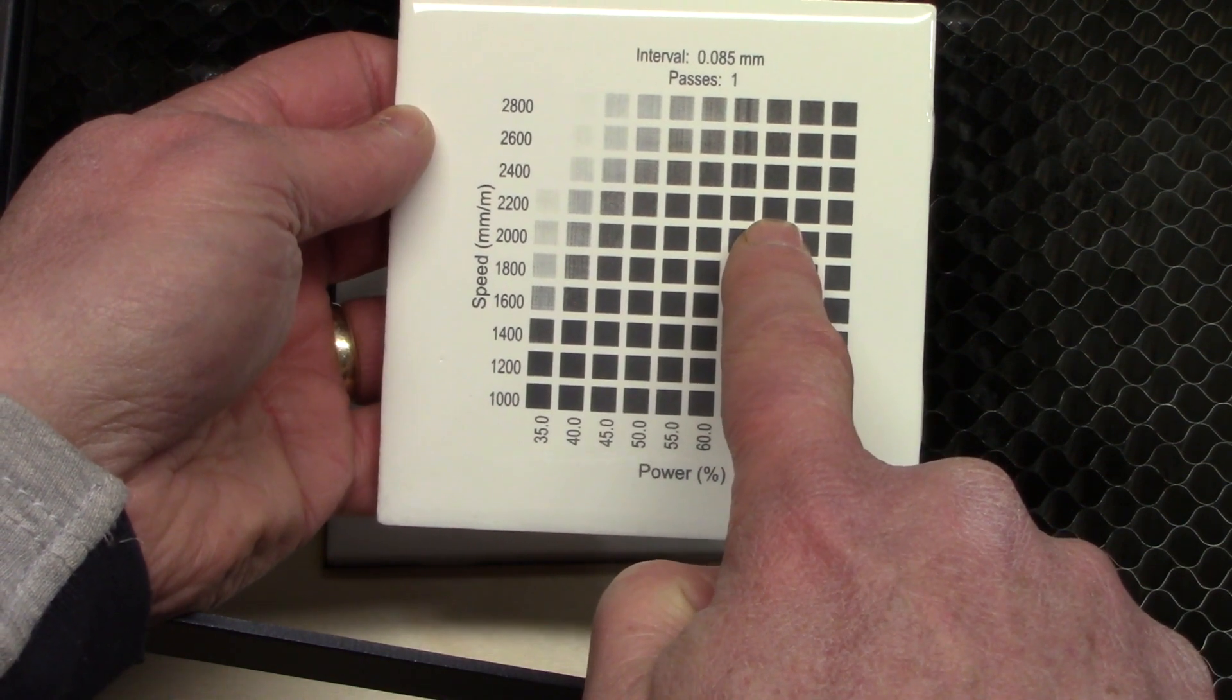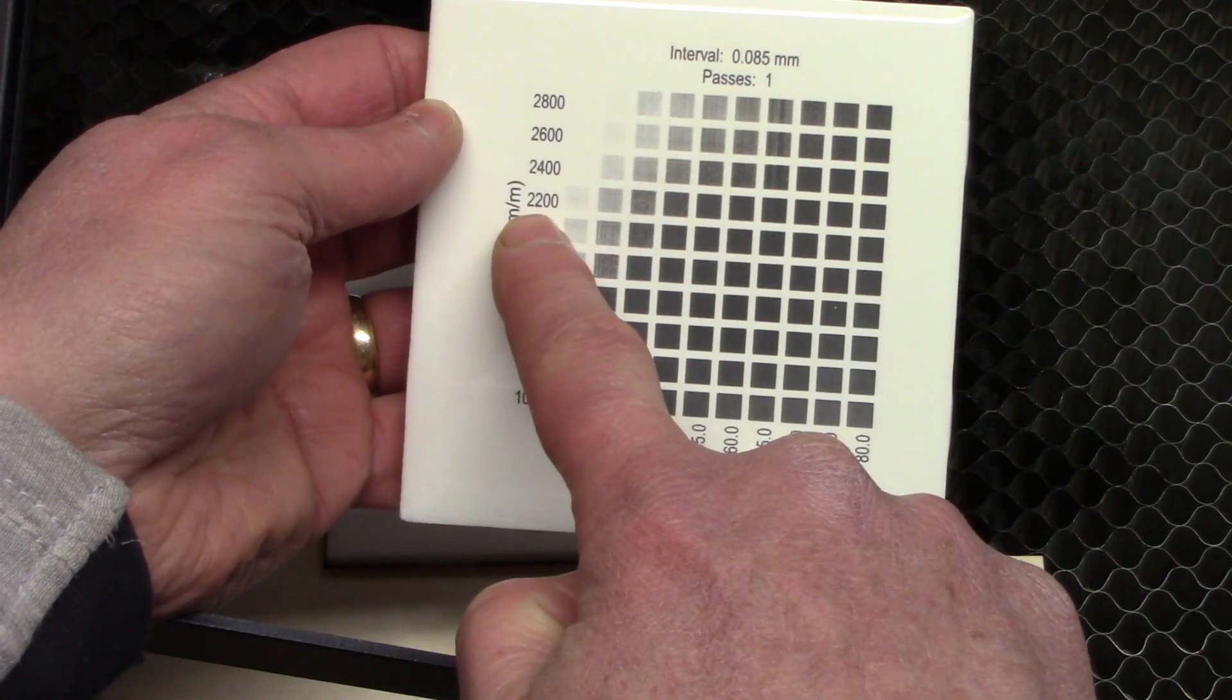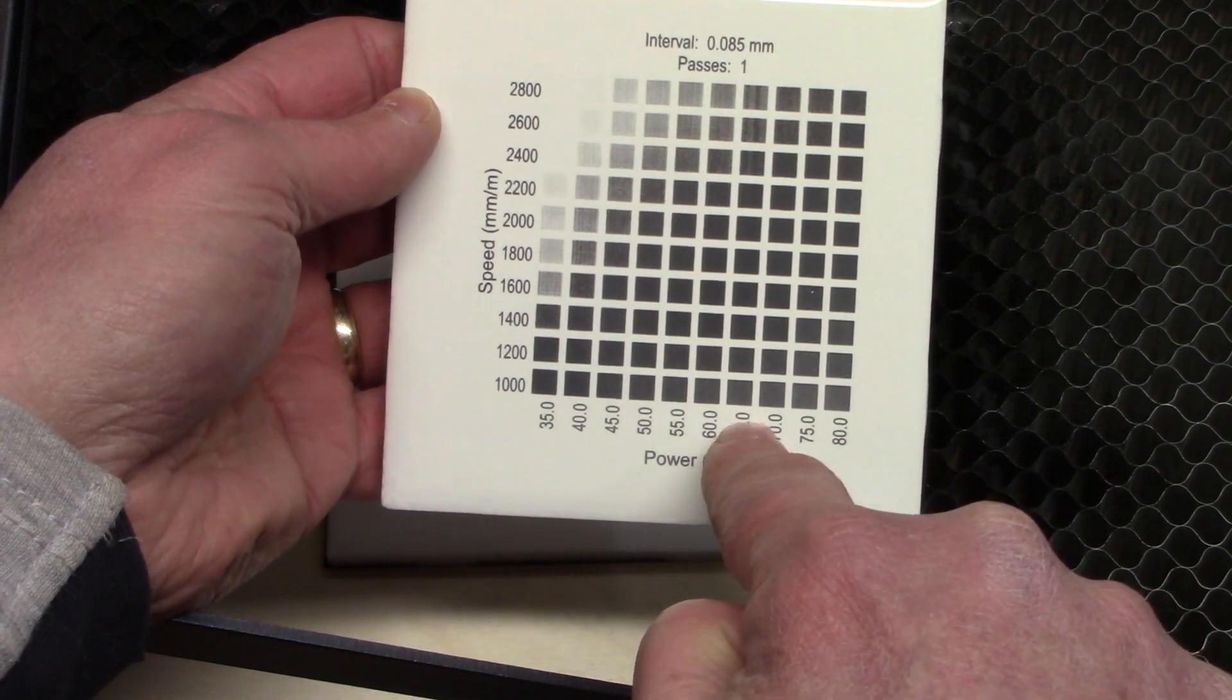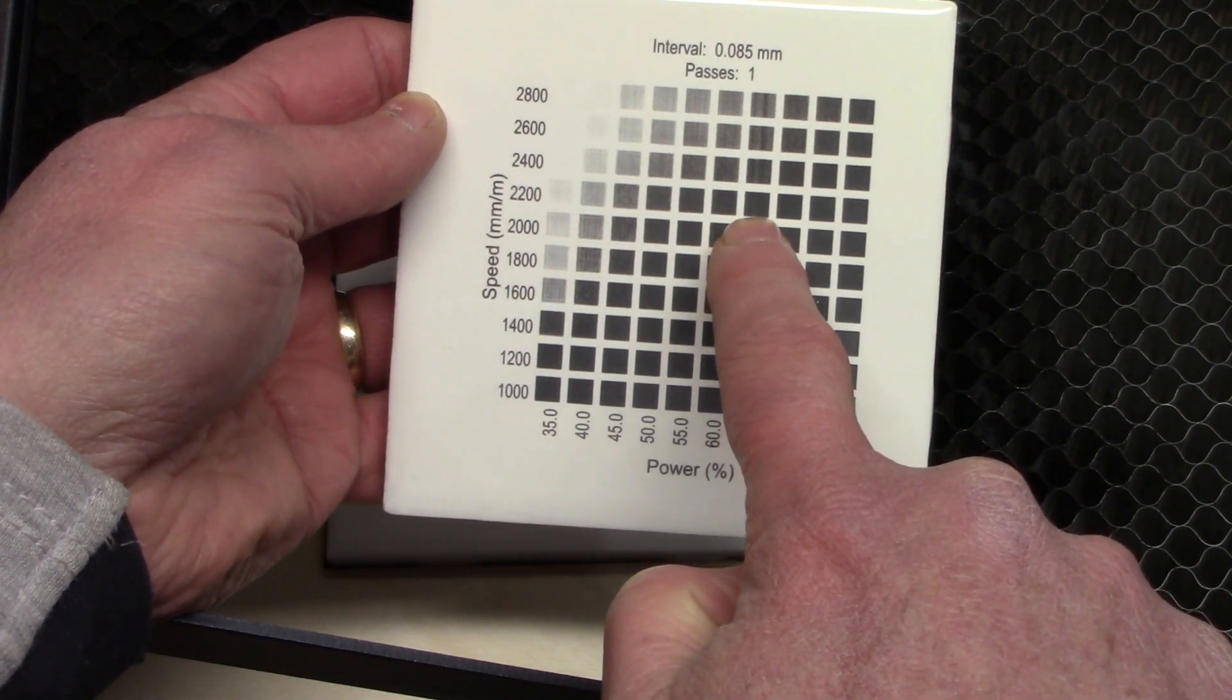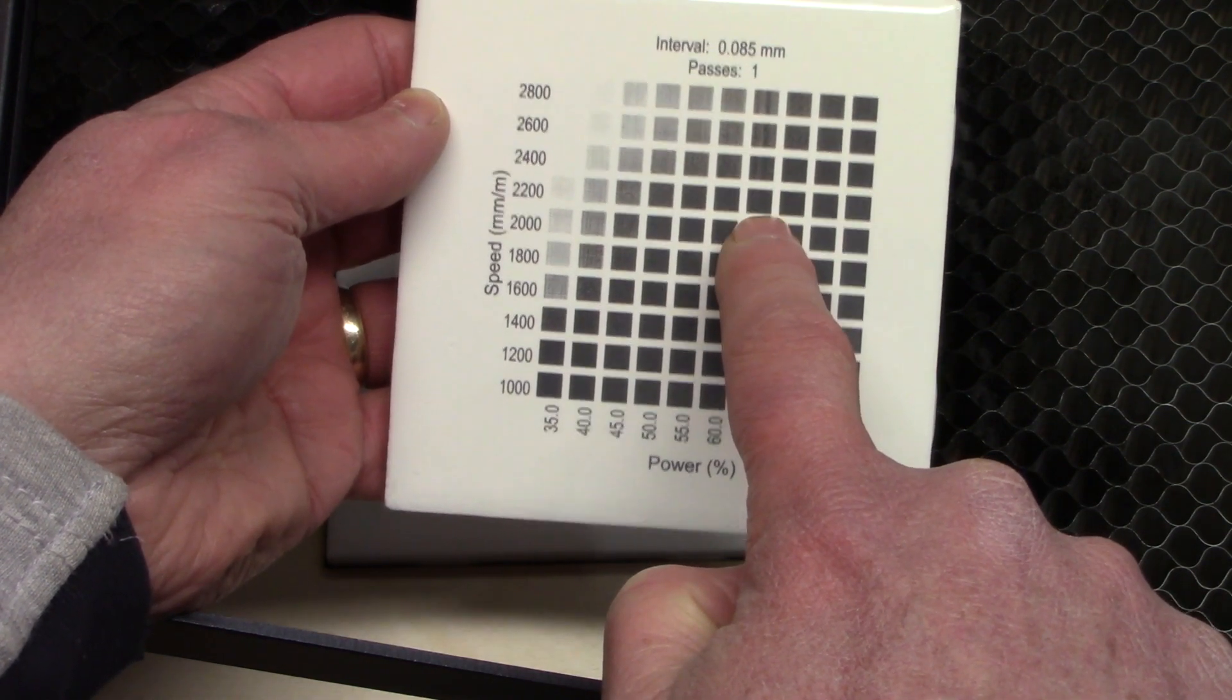So I'm looking at this block that's 2200 millimeters per minute at 65 percent power. That's the one that I'm going to be using here to burn an image on this tile.